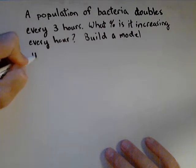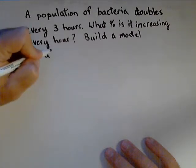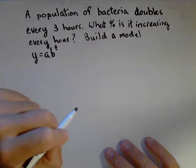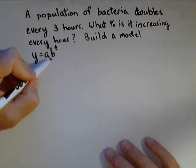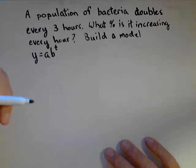Now, we're gonna use the form Y equals AB to the T, where T is measured in hours in this case. And I'm gonna show you how to find B, but then I'm gonna show you a shortcut.